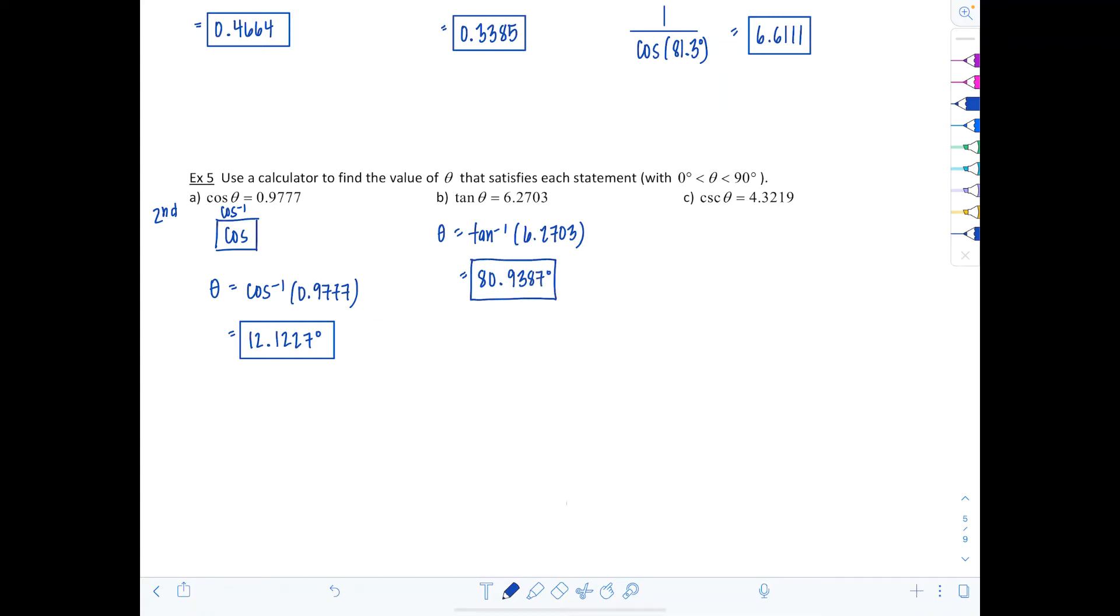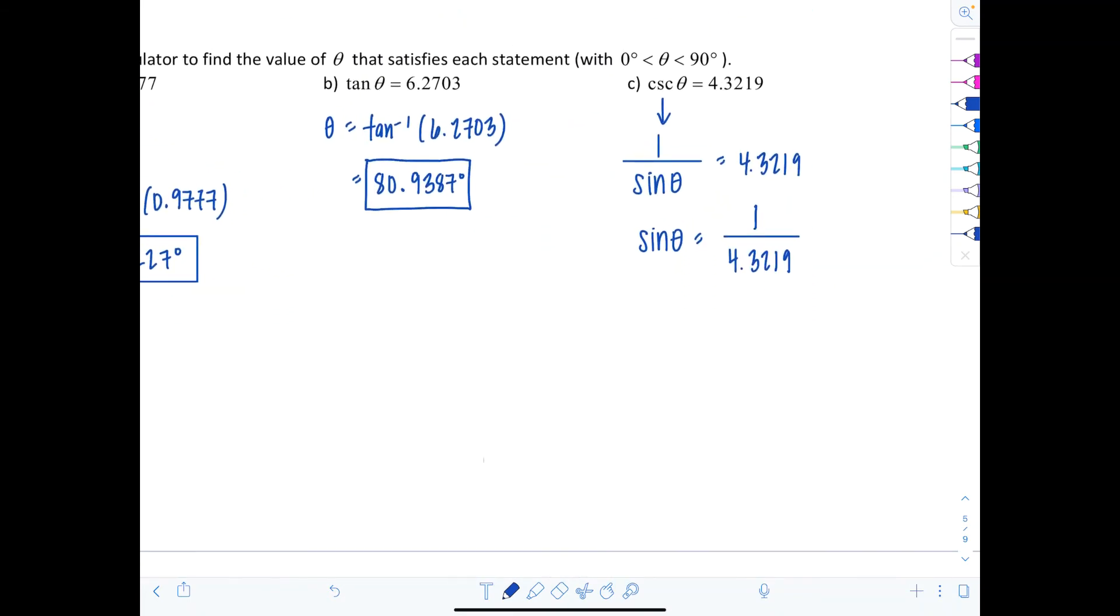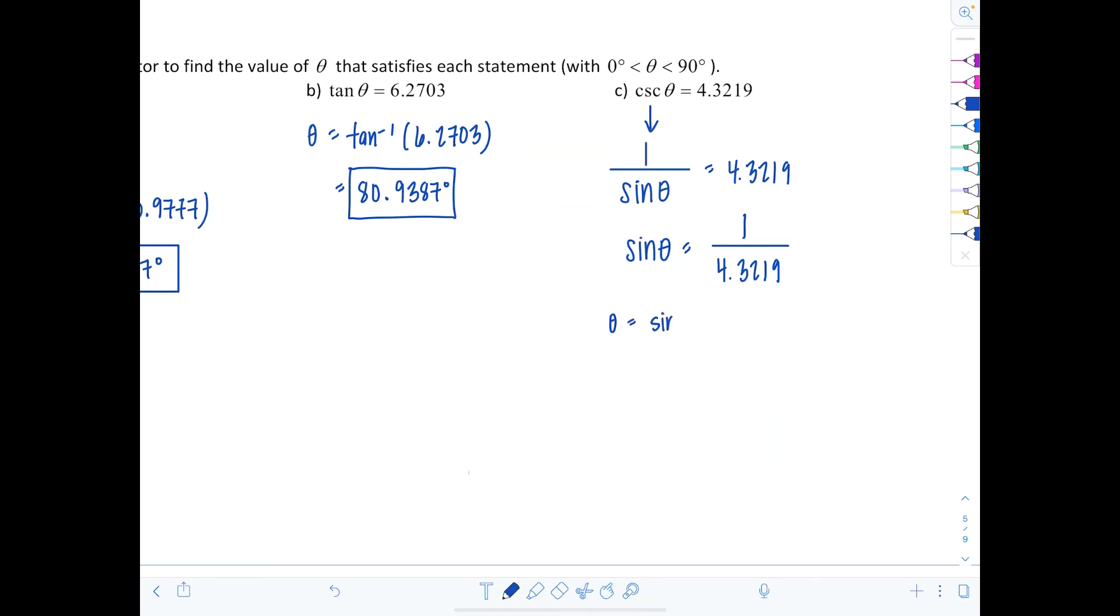Lastly, this one's a little tricky. Cosecant of θ equals 4.3219. Remember cosecant θ is 1 over sine θ, so this means 1 over sine θ equals 4.3219. If I take the reciprocal of both sides, that means sine of θ equals 1 over 4.3219. So in the calculator, punch in sine inverse of 1 over 4.3219, and you should get 13.3783 degrees.